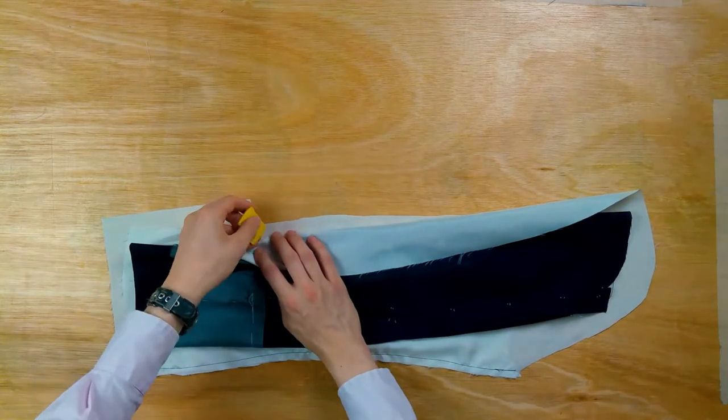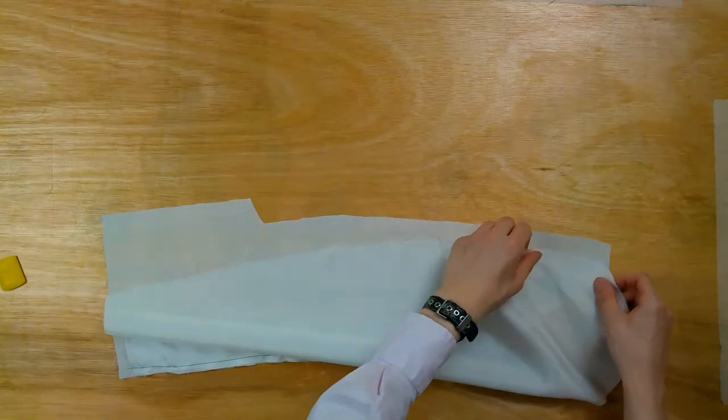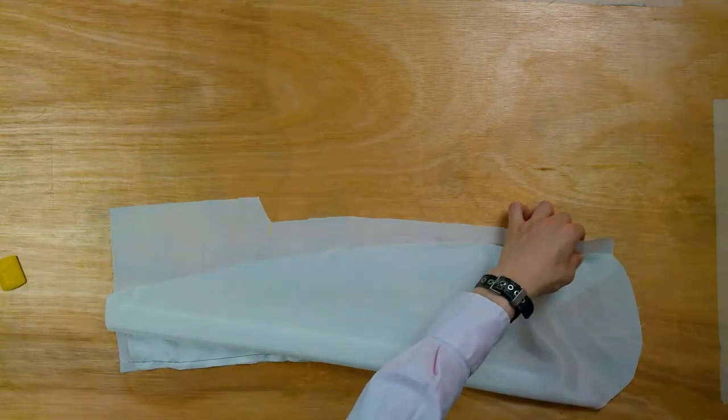Join the shorter seam with pins, and then a 1cm seam allowance. Line the top sleeve up to the inlay, and machine down to the bit above the top of the vent.